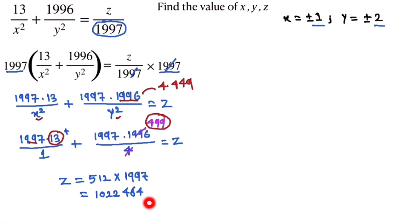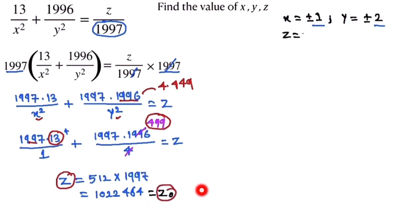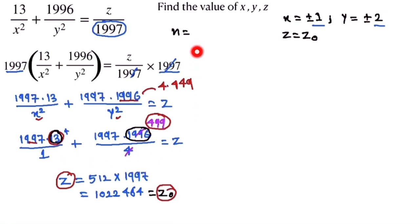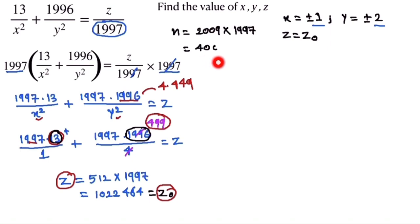This gives a large number, so we let z = z₀ = 1,022,464. We also find another real value: 1996 + 13 = 2009, so there is another value n₀ = 2009 × 1997, which is also a large number. We let this equal n₀.